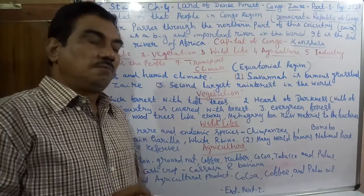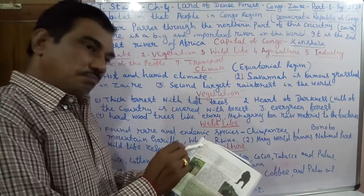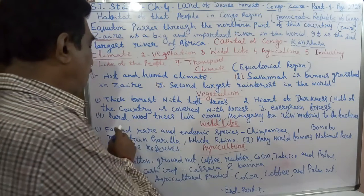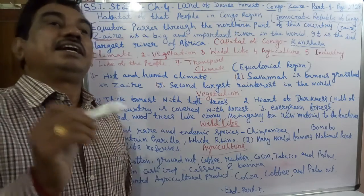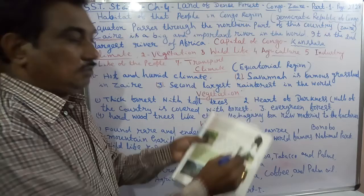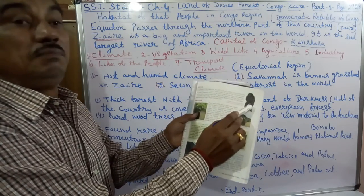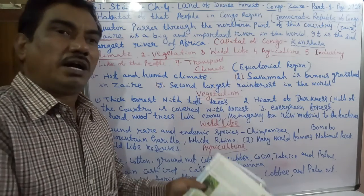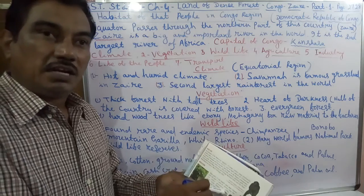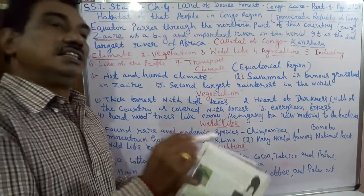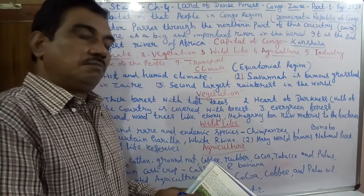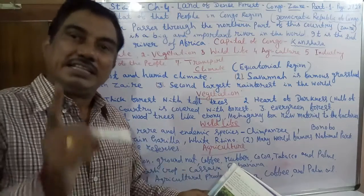Then we come to wildlife. Congo has rare and endemic species such as the chimpanzee, bonobo, and mountain gorilla. The pygmy — which means short height — is also found here. White rhino are found in this wildlife, and the world-famous national parks and wildlife reserves are found in this Congo area.